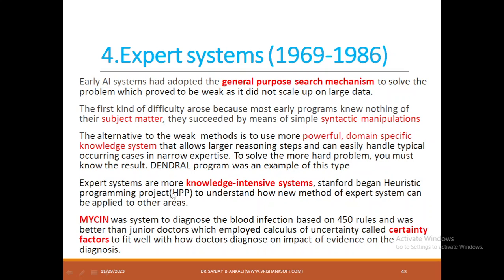Expert systems were more knowledge-intensive. Stanford began the heuristic programming project to understand how expert system methods could be applied to other areas. Then MYCIN was introduced — a system to diagnose blood infections based on 450 rules. It performed better than junior doctors, employing certainty factors to represent how evidence impacted the diagnosis. Compared to early AI systems, expert systems were more knowledge-based, using more and more rules.